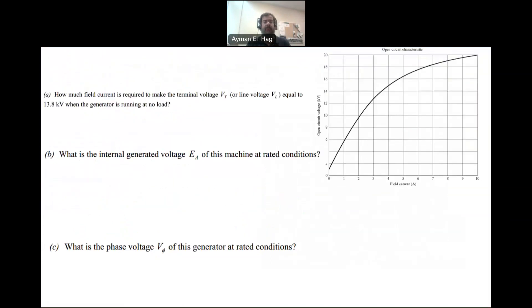Now we have questions to answer. First, how much field current is required to make the terminal voltage Vt equal to 13.8 kV at no load conditions? When Ia equals zero, your Vt and Ea are equal. At 13.8 kV line-to-line, around this point on the characteristic, you see that your If is approximately 3.5 amps.